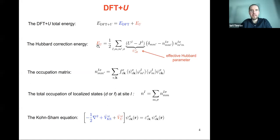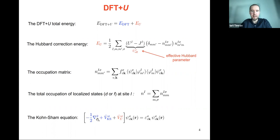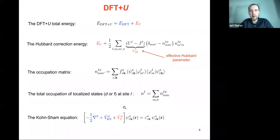By knowing this expression for the energy, we obtain the modified Kohn-Sham equation by taking a functional derivative of the energy with respect to the wave function. We obtain this modified Kohn-Sham equation where the blue term is the standard DFT contribution — kinetic energy plus the Kohn-Sham potential — but now we have an extra potential in red: the Hubbard potential, the derivative of E_U. In practice, we need to solve this modified Kohn-Sham equation that includes the +U correction for the d or f electrons.